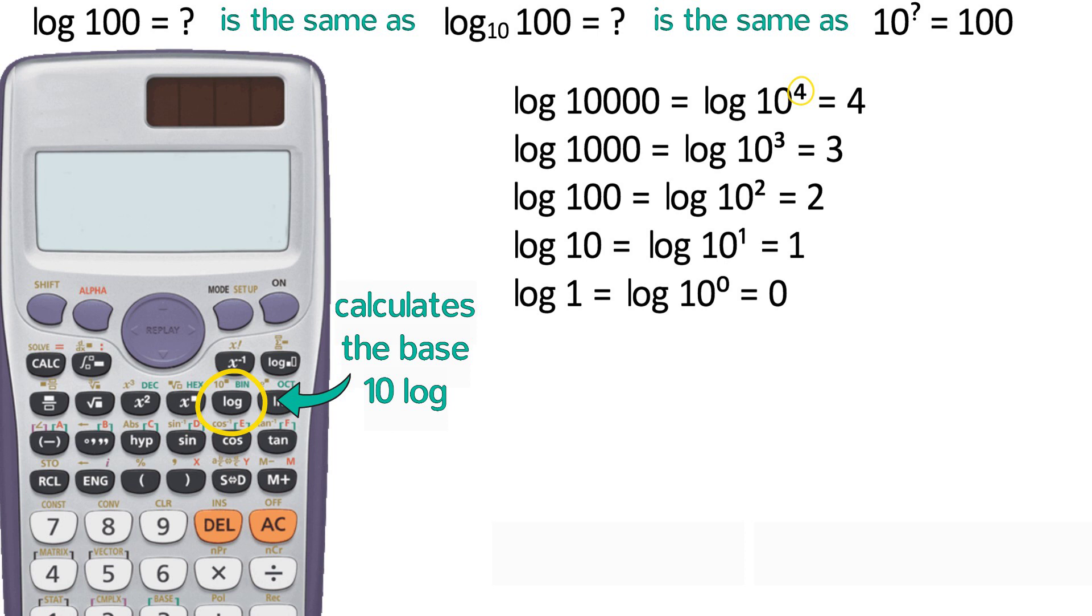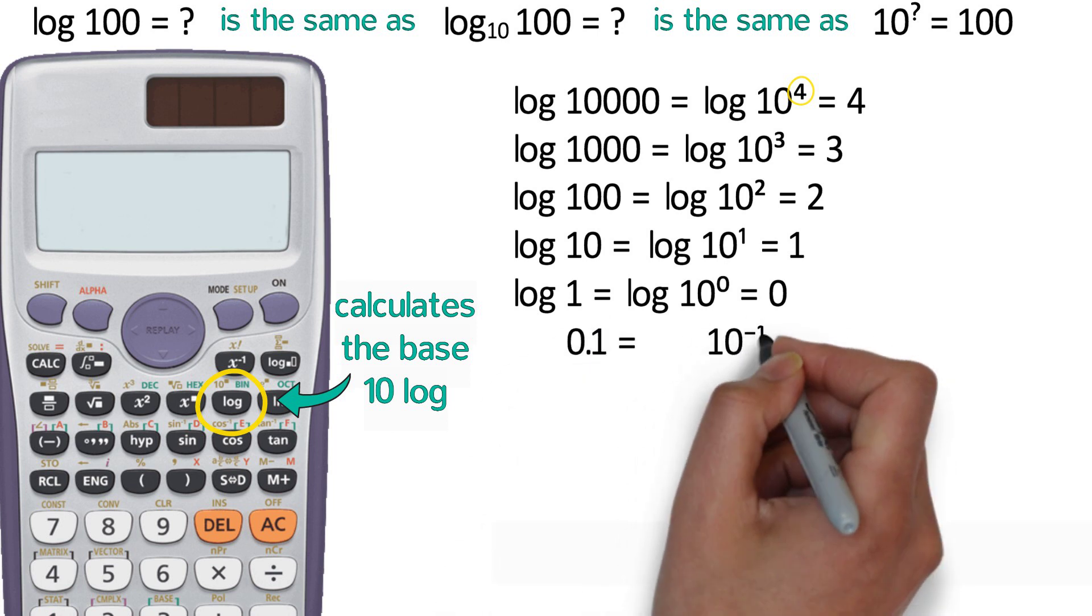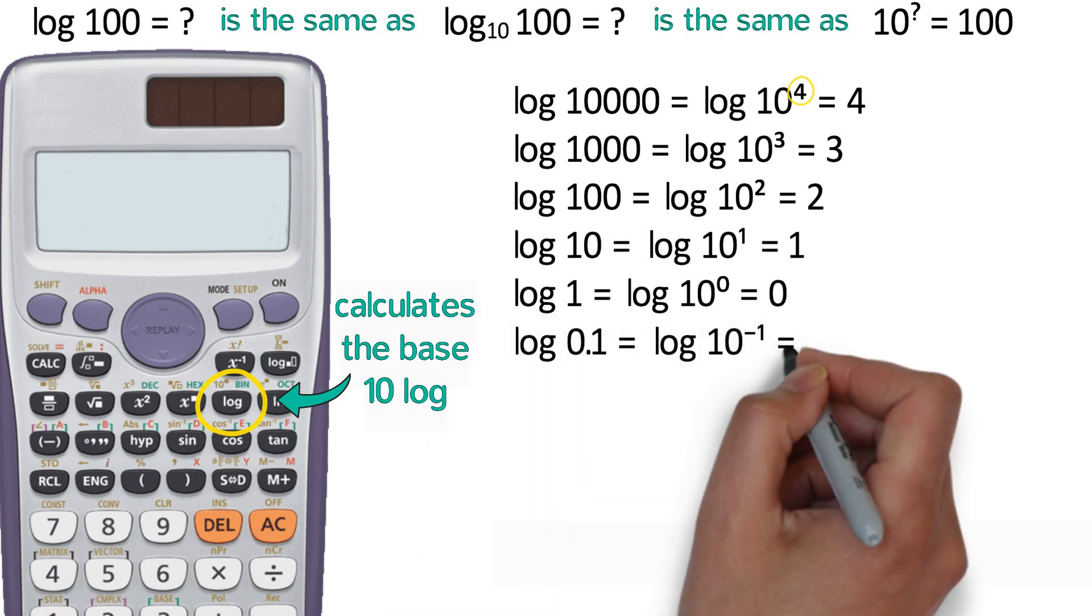In fact, the log of 1 is always 0, no matter what the base of the log is. 0.1 is 10 to the negative first, so the log of 0.1 is negative 1.